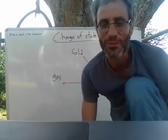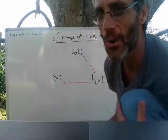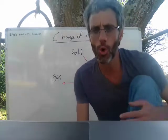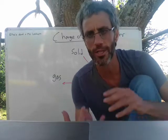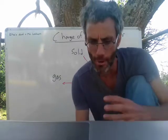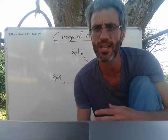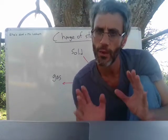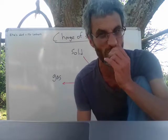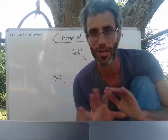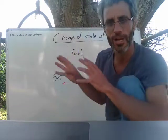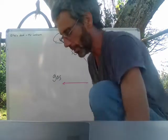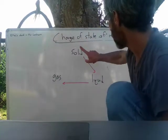I almost forgot the theory part of today's lesson, so we're looking at change of state of matter. I'm sure you all remember that we spoke about solid, liquid and gas — we looked at how the particles are arranged in these three states, and what we're going to do now is look at how they change from one state to another. Any notes that I write in these videos, please copy them into your books.